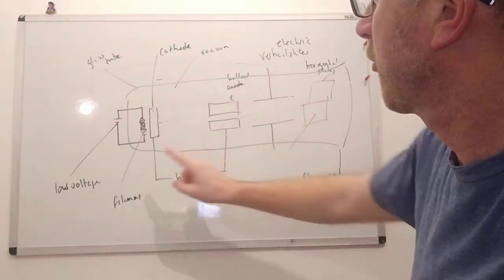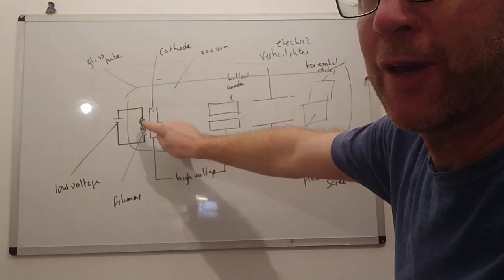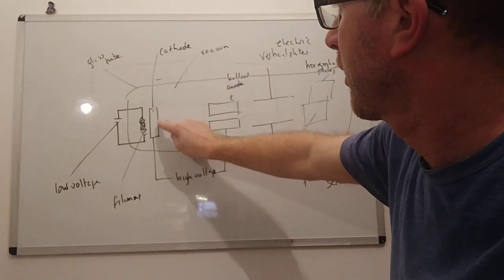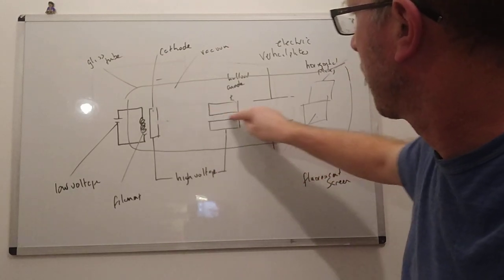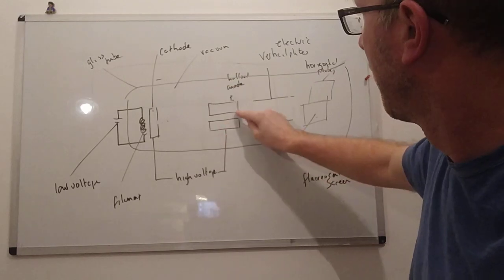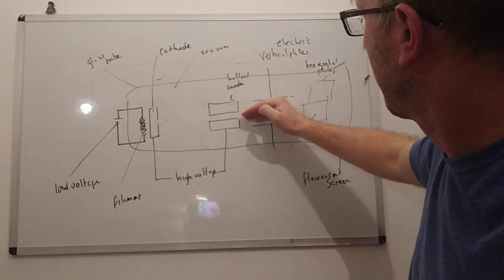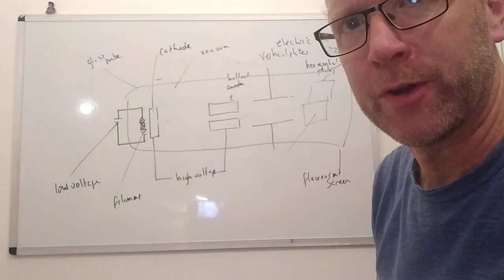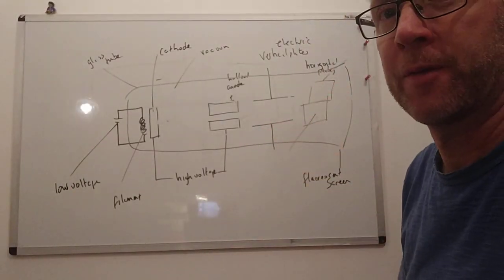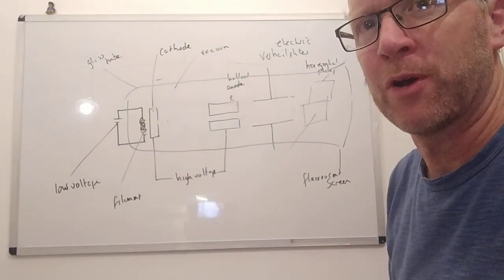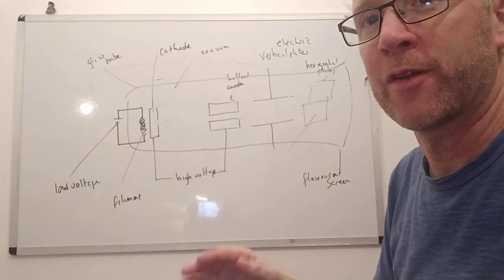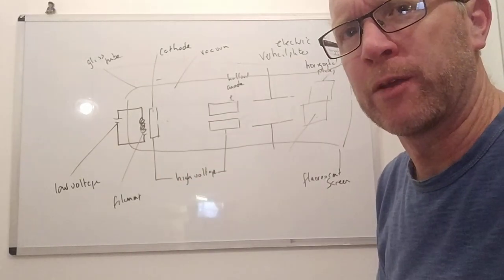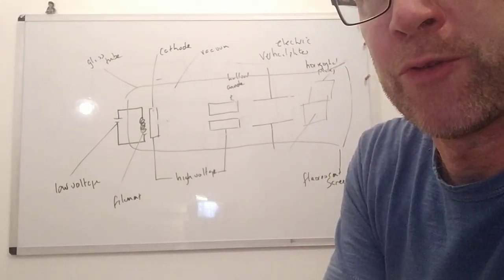To recap: we need to make electrons by heating a filament, which heats the cathode — thermionic emission. Electrons are emitted, then accelerated by the high voltage to the anode. They pass right through the focusing anode, then vertical and horizontal plates move the beam up and down or back and forth. When they hit the screen, that's your cathode ray tube. Cathode rays are streams of electrons, and we'll look at the properties of cathode rays and electrons in the notes.